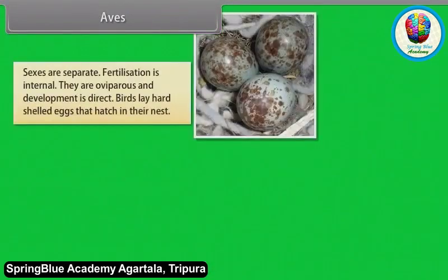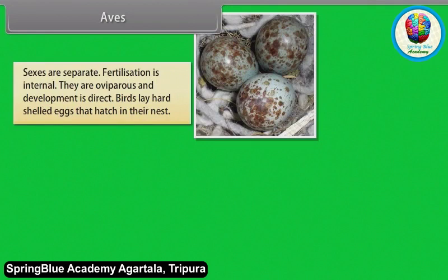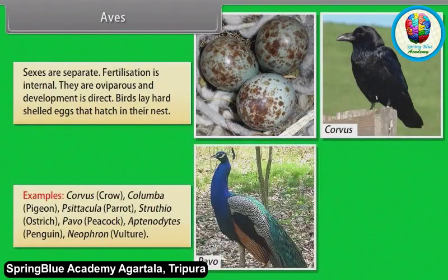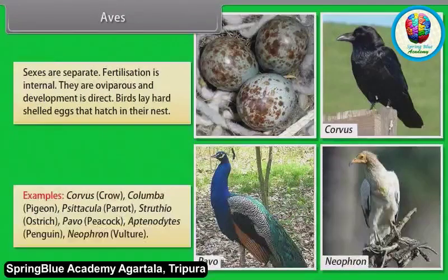Air sacs connected to the lungs supplement respiration. Sexes are separate. Fertilization is internal. They are oviparous and development is direct. Birds lay hard-shelled eggs that hatch in their nest. Examples: Corvus (Crow), Columba (Pigeon), Psittacula (Parrot), Struthio (Ostrich), Pavo (Peacock), Aptenodytes (Penguin), Neophron (Vulture).